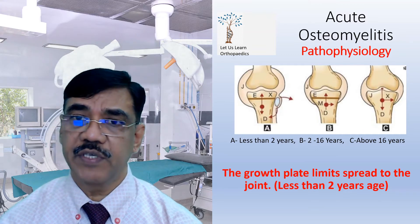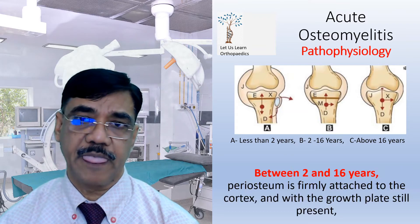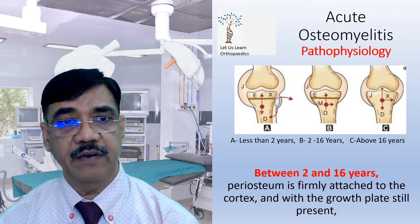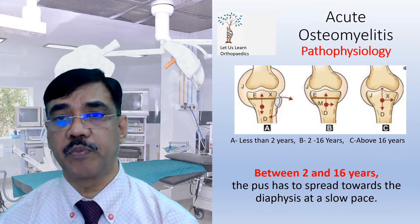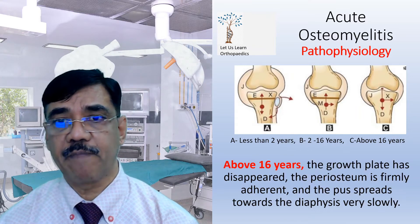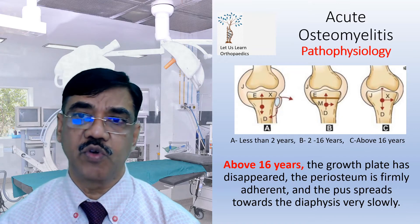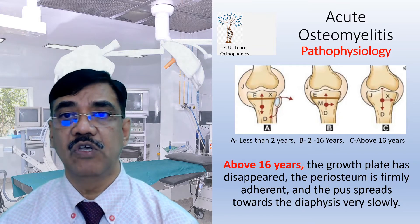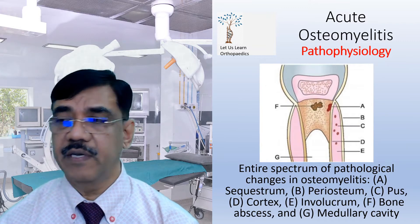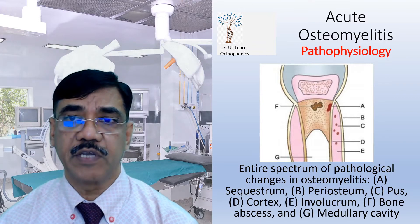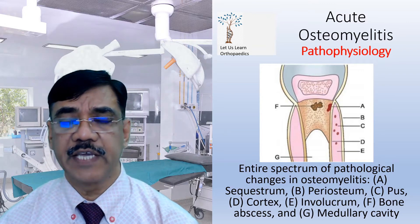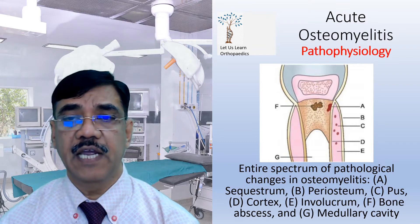In children less than two years of age, the growth plate limits the spread to the joint. Between the ages of 2 and 16 years, the periosteum is firmly attached to the cortex, and with the growth plate still present, the pus must spread towards the diaphysis at a slow pace. In children above 16 years, the growth plate has disappeared, the periosteum is firmly adherent, and pus spreads towards the diaphysis very slowly. In this diagrammatic representation of pathophysiology — useful for exams — A denotes the sequestrum, B the periosteum, C pus, D cortex, E involucrum, F bone abscess, and G the medullary cavity.